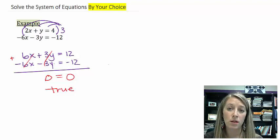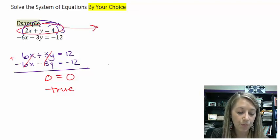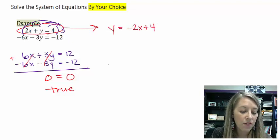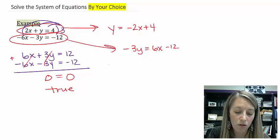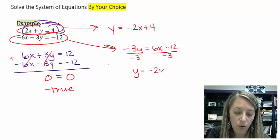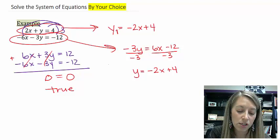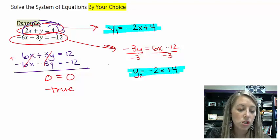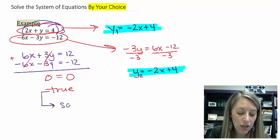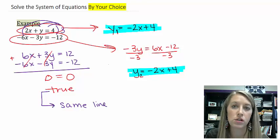Let's think about a visual representation. If I solve for y in the first equation, I get y equals negative 2x plus 4. If I solve for y in the second equation, I get negative 3y equals 6x minus 12, and dividing by negative 3 gives y equals negative 2x plus 4. These equations are exactly the same. So if you ever come down to a true statement, you actually have the exact same line in both equations.